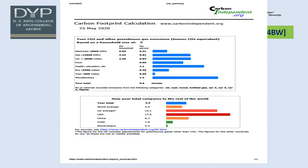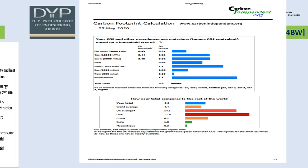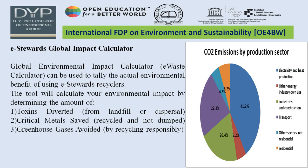A calculation for household energy covers electricity used for housework, gas, cars, food, health, education, bus, train, and miscellaneous travel. The total for this family is 5.5 tons, compared to the world average of 4.4 tons. India's average is mostly 1.8 tons. Online software is used for CO2 emission calculation by sector: electricity, other energy, industry, transport, other sectors, and residential. The Global Environment Impact Calculator tallies the environmental benefits of using e-stewards recyclers, including toxic material diverted from landfill, critical metals saved, and greenhouse gases avoided by recycling.